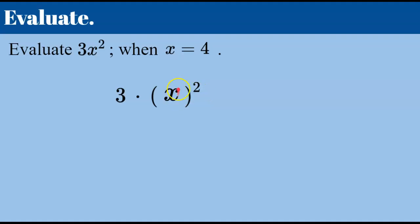That means take whatever is here and multiply it by itself 2 times. So 3 times x times x. Now that we understand we are ready to find what the value of x is. x is going to be replaced by 4. Both of these are x. They both need to be replaced with numerical value 4.